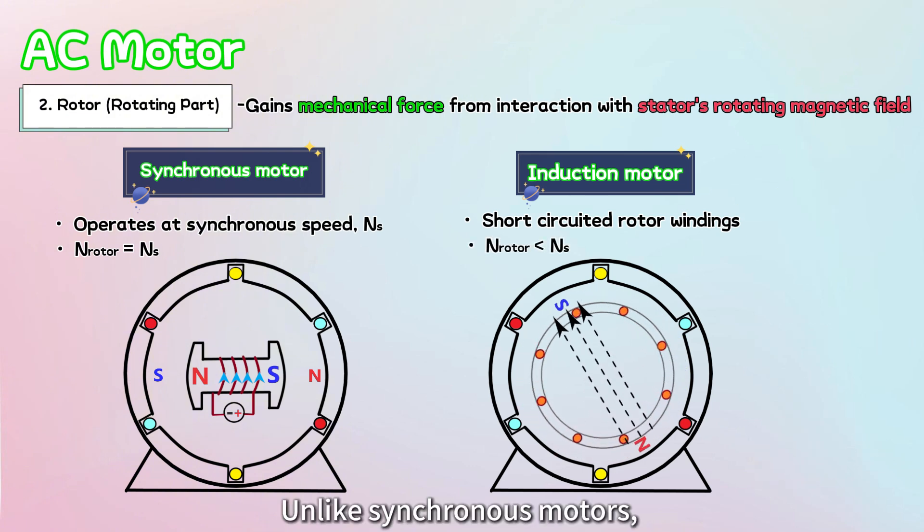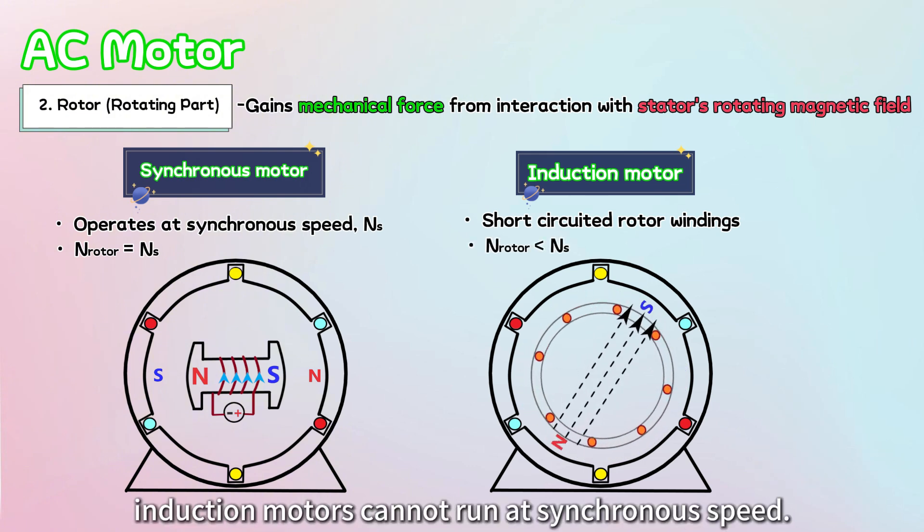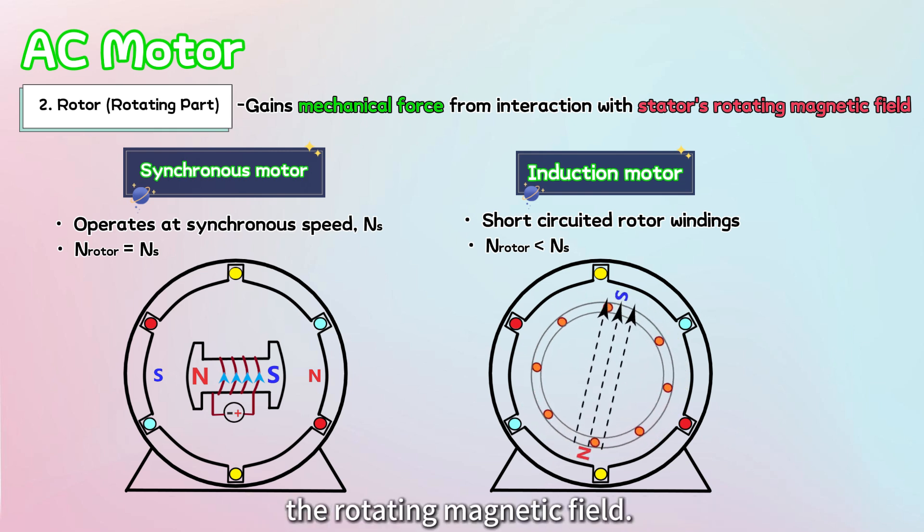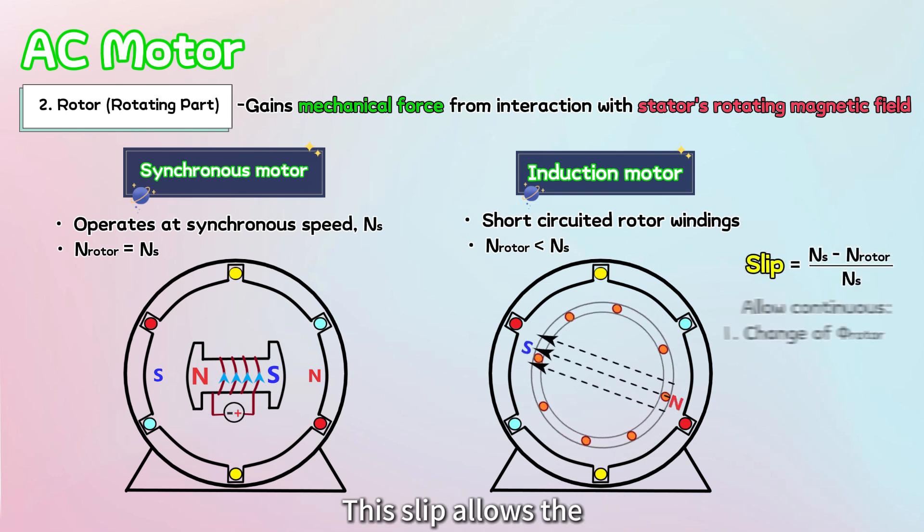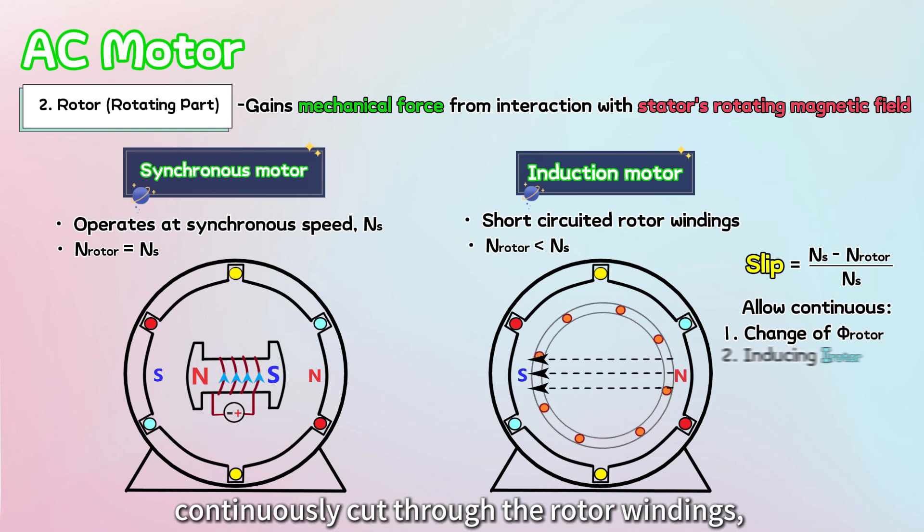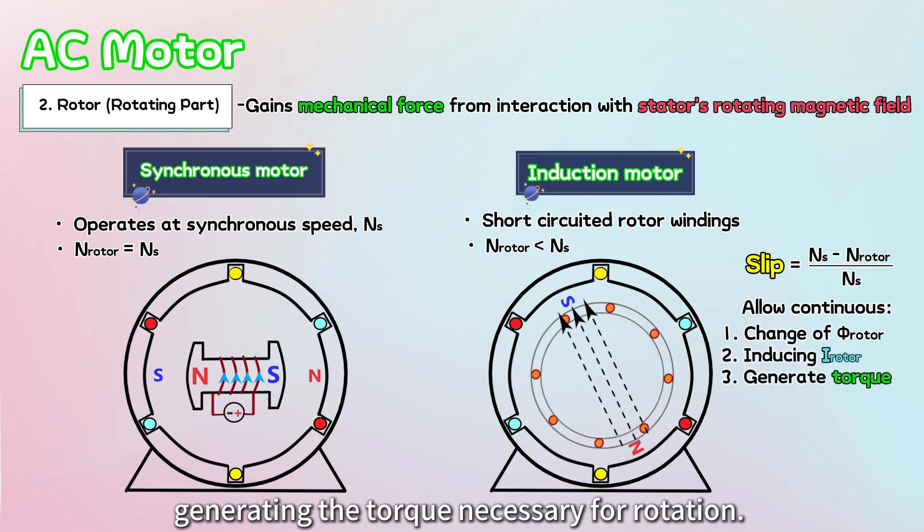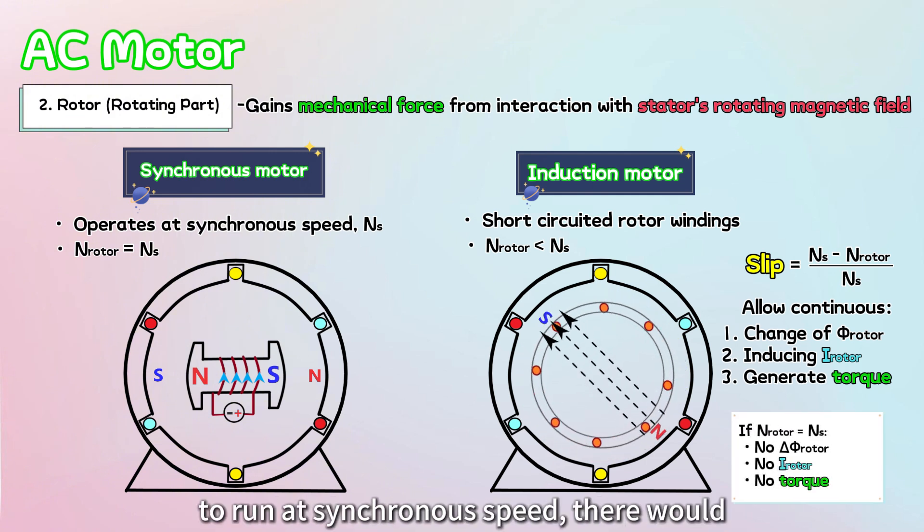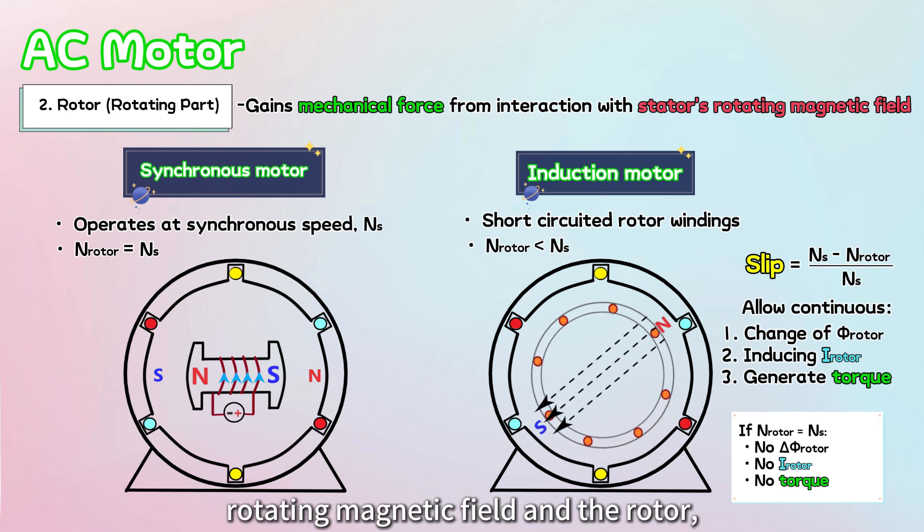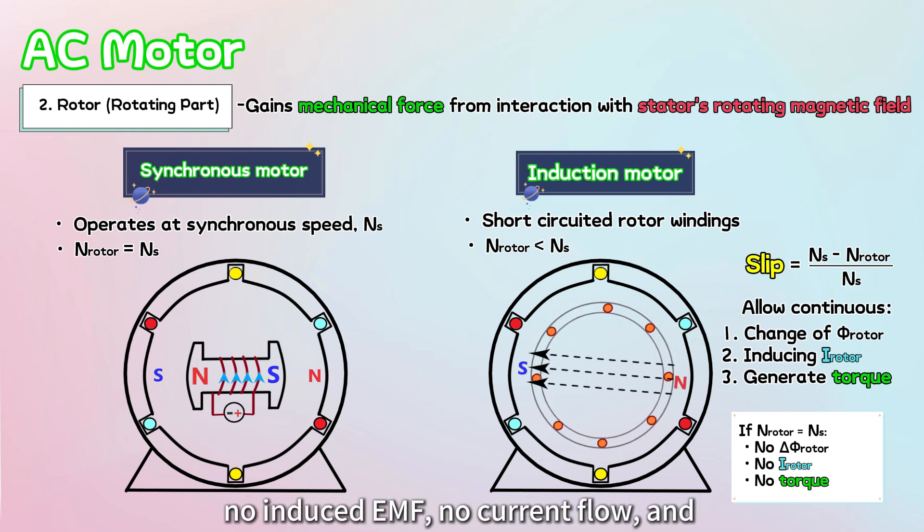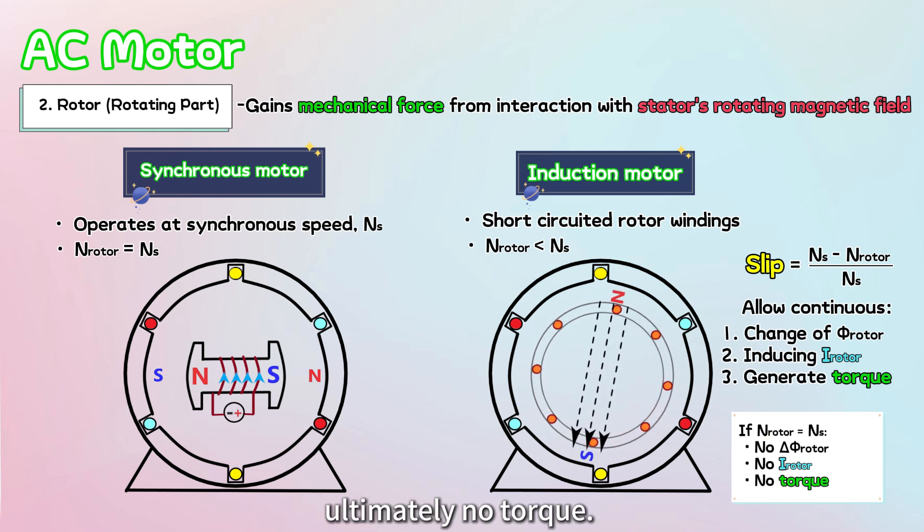Unlike synchronous motors, induction motors cannot run at synchronous speed. Their rotor speed lags slightly behind the rotating magnetic field. This is known as slip. This slip allows the stator's rotating magnetic field to continuously cut through the rotor windings, inducing the current and generating the torque necessary for rotation. If an induction motor were to run at synchronous speed, there would be no relative motion between the rotating magnetic field and the rotor, resulting in no changes in the magnetic flux across the rotor, no induced EMF, no current flow, and ultimately no torque.